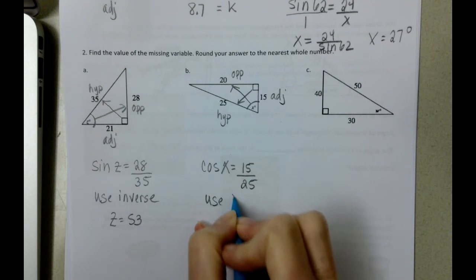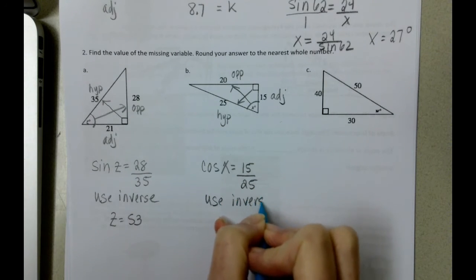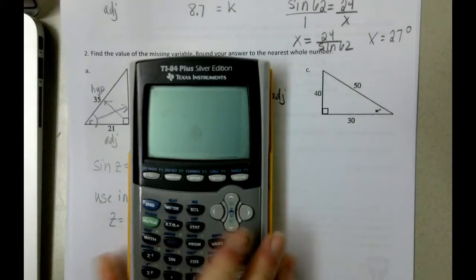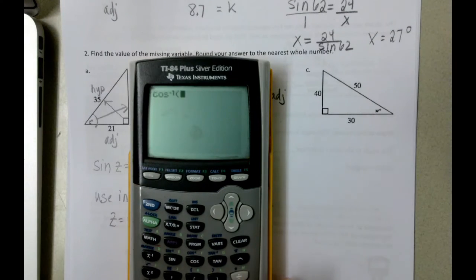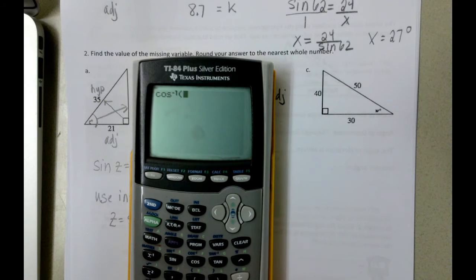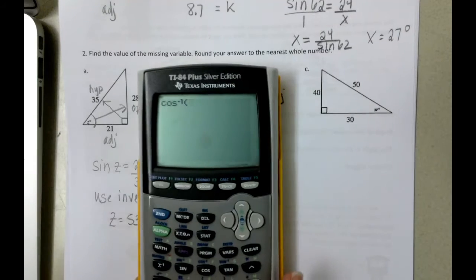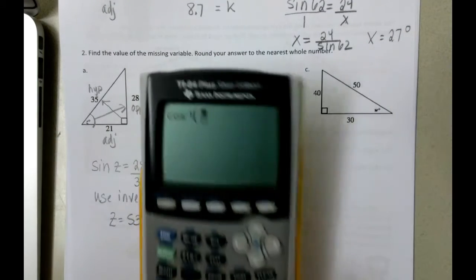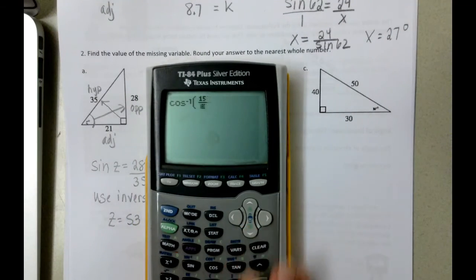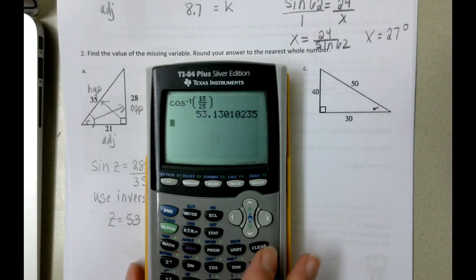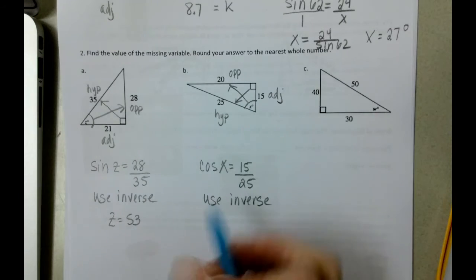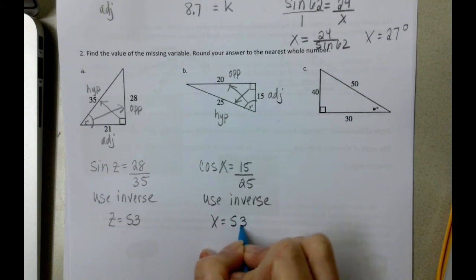We need to use the inverse button. And when we do that, there's the inverse cosine. And then we type in our fraction, which is 15 divided by 25. And then once again, we're going to round to the nearest whole number. We get 53.1. So this is going to be angle X is going to be 53 again.